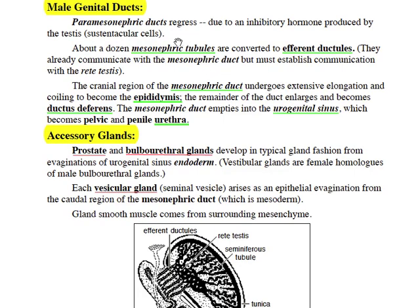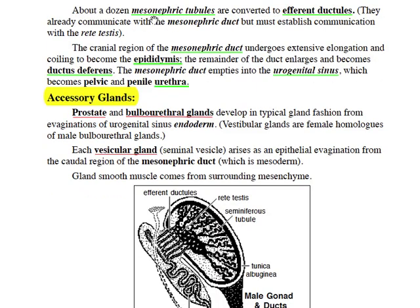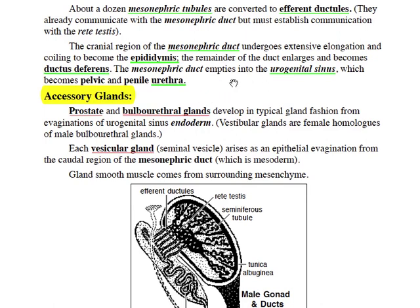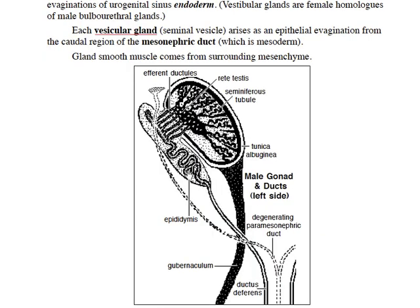In the presence of testicular hormones, the paramesonephric duct regresses, and the mesonephric duct develops into the epididymis and ductus deferens. Mesonephric tubules become efferent ductules. The mesonephric duct, as the ductus deferens, will empty into the urogenital sinus, which will become the pelvic and penile urethra. Prostate and bulbourethral glands arise as outgrowths of urogenital sinus endoderm, and vesicular glands arise from the epithelium lining the mesonephric duct. The ductules originate from mesonephric tubules and must establish communication with the rete testis, which drains seminiferous tubules. Both the seminiferous tubules and rete testis are derived from the seminiferous cords formed by supporting cells of the gonadal ridge.